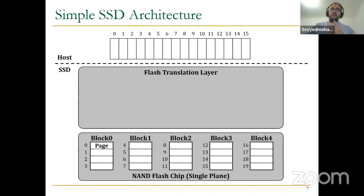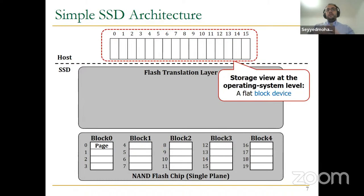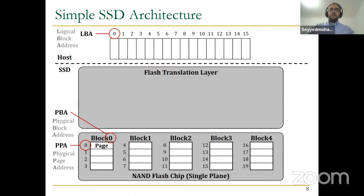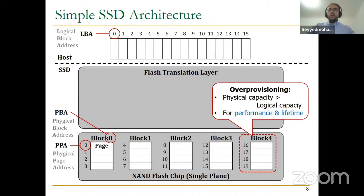In simple SSD architecture, at the host layer the storage view from the operating system is a flat block device with several consecutive logical block addresses. But in the SSD we have physical block addresses and physical page addresses. For example, we might have 16 logical block addresses but 20 physical page addresses in the SSD. That is because of over-provisioning — the physical capacity in the SSD is larger than the logical capacity, which can significantly contribute to performance and lifetime of SSDs.